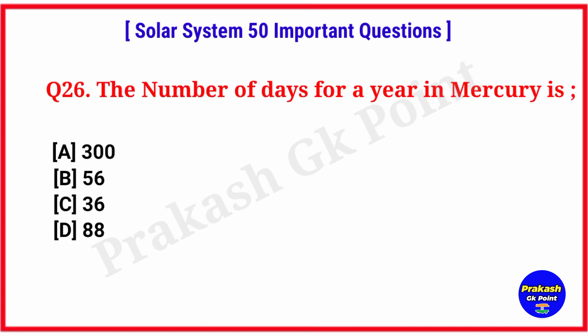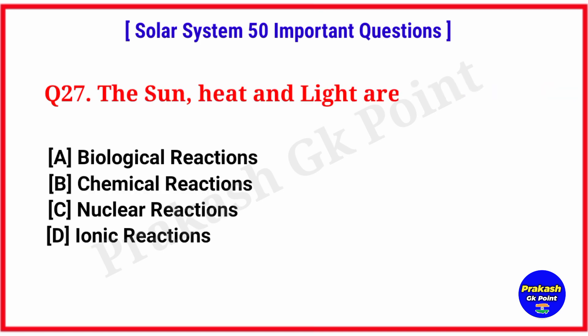The number of days for a year in Mercury is? Answer: option D, 88 days. The sun's heat and light are produced by? Answer: option C, nuclear reactions.